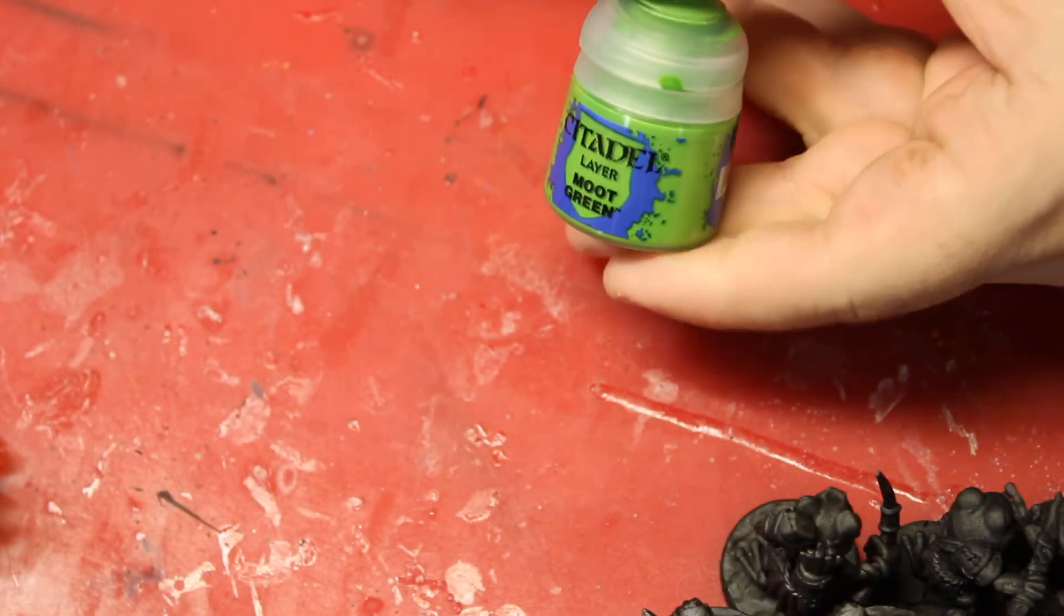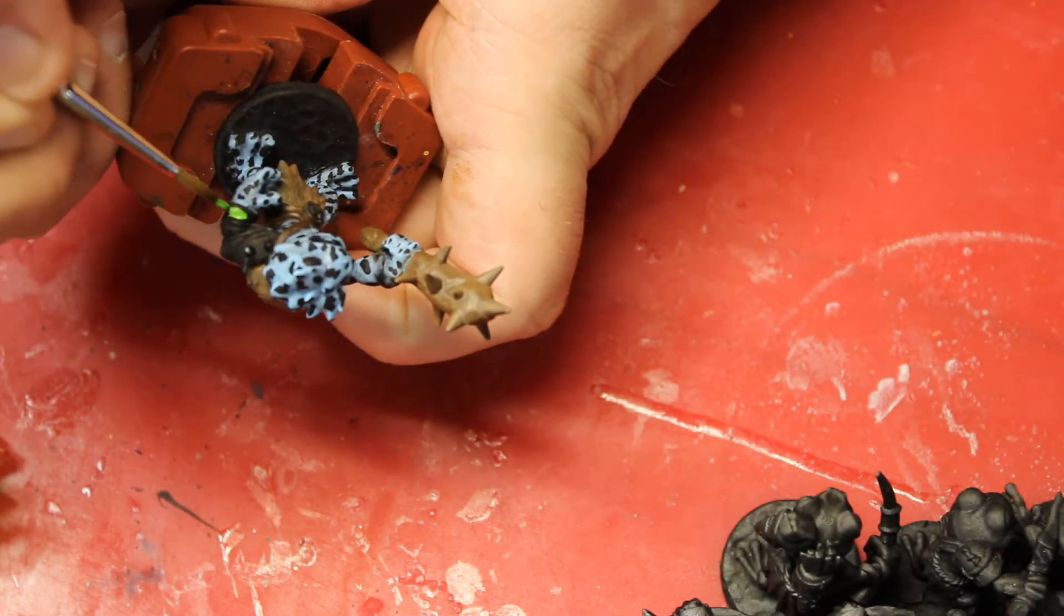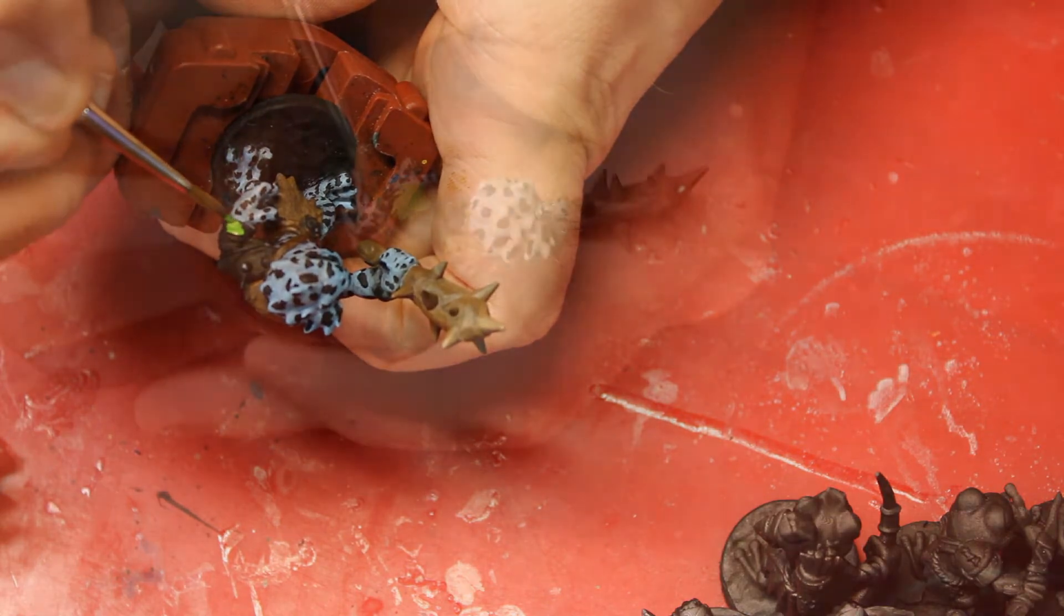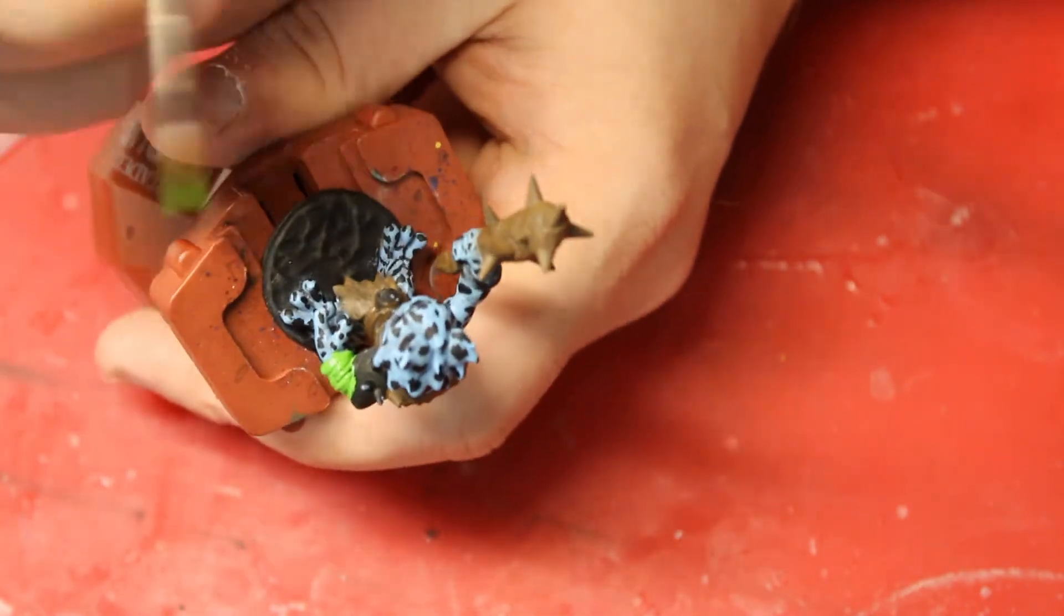After I finished with the matte black, I then grab Moot Green to give his wraps and some of the stuff that he holds around him a nice green contrast to the blue. It came out real nice, and it all melted together very well as the green looks amazing on his arm.